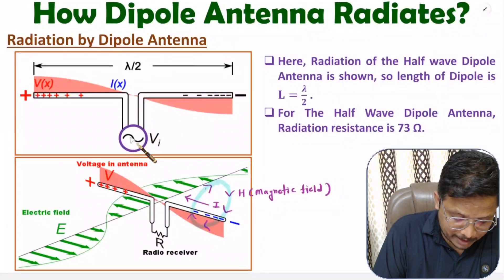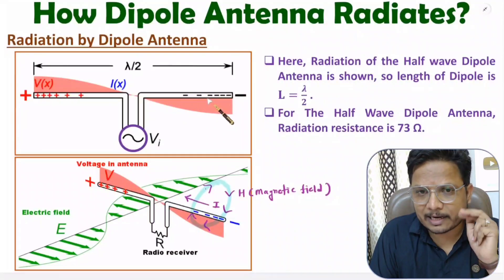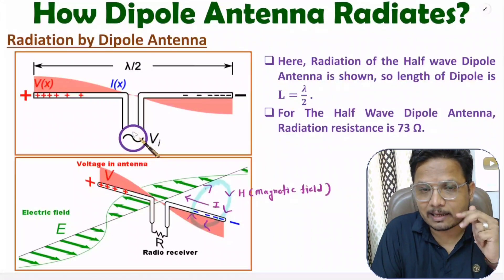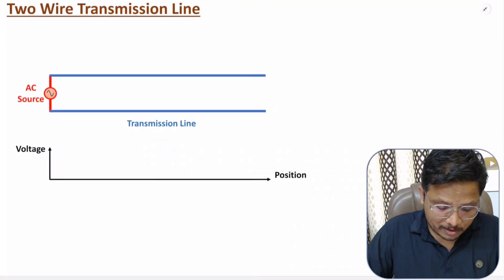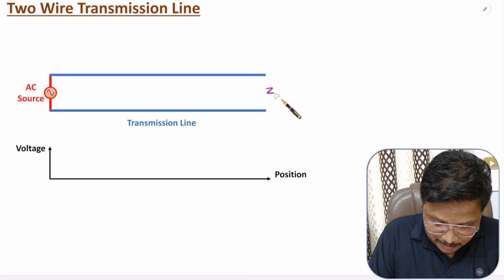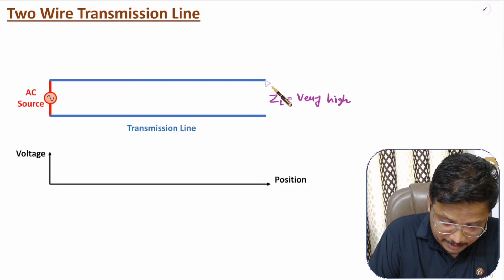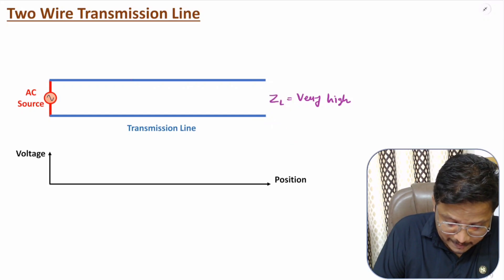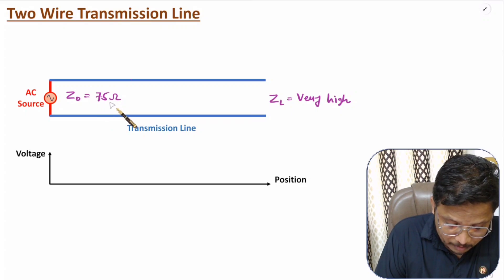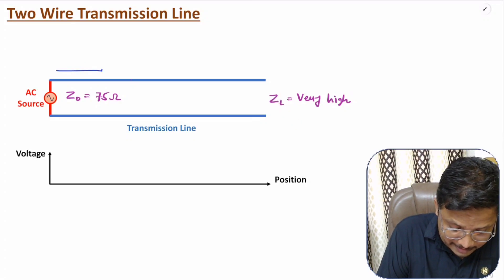The dipole generates EM waves for reasons you need to understand. If you observe a dipole connected with a transmission line, consider a two-wire transmission line kept open at the end. Over here we will have a load resistance ZL that is very high. Since ZL is very high, we will have maximum reflection from the two terminals of the transmission line. Let's consider the characteristic impedance Z0 has a value of 75 ohms — Z0 and ZL are completely mismatched, causing reflection of the signal in this direction.